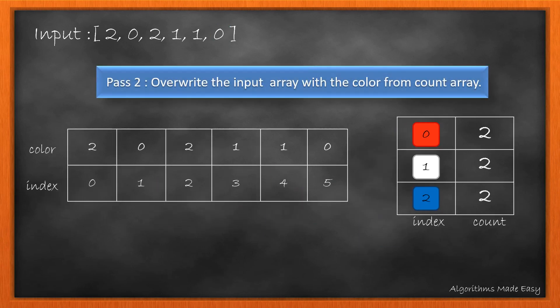Moving ahead we will perform the second pass. In this one we will override the same input array with the color count from the count array. For each color, while the count is greater than 0, we override the input array with the value of color.